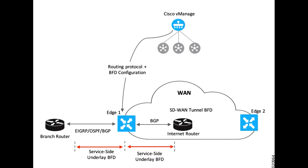Cisco SD-WAN Manager pushes this configuration to the Edge router. In this example, assume that OSPF is configured to receive forwarding path detection failure messages from BFD. If there is a physical link failure, OSPF is prompted to shut down its neighbors and restore any routing information it may have advertised to or received from its remote neighbors.